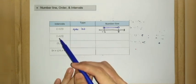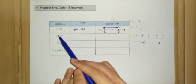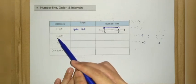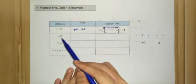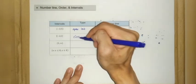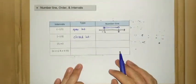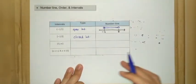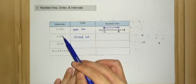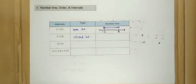For the second example, the endpoints are still negative 2 and 5, but the difference is the type of bracket — we have box brackets for both endpoints. Therefore this interval is the closed interval, which means both endpoints are included.